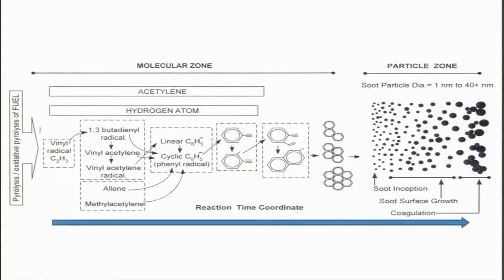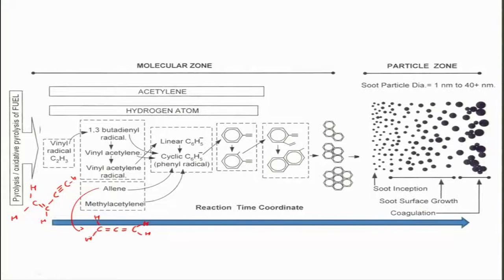It can then form a vinyl acetylene kind of structure. There will also be allene being formed — allene structure is basically C=C=C with H atoms — and this can be converted into methyl acetylene, which is basically CH₃–C≡C– kind of structure.